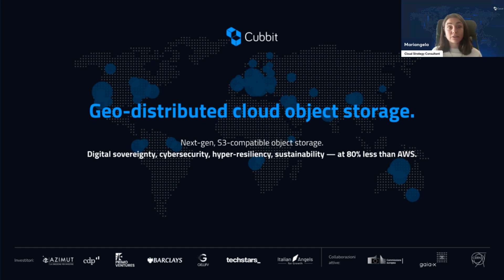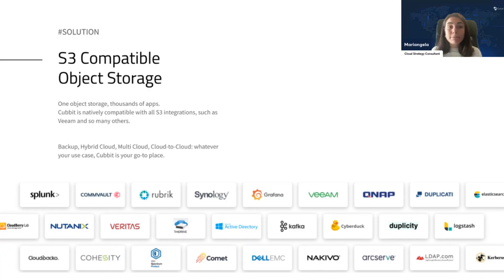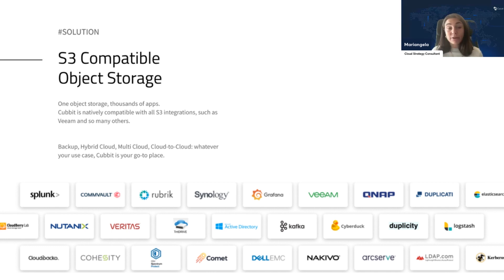I'd like to give you an idea of where Cabit technology stands compared to the competition and where we are different. Cabit offers an S3-compatible object storage solution, and the main use case — though not limited to — is that the majority of our clients use Cabit as a second or third backup layer in an anti-ransomware and disaster recovery strategy.